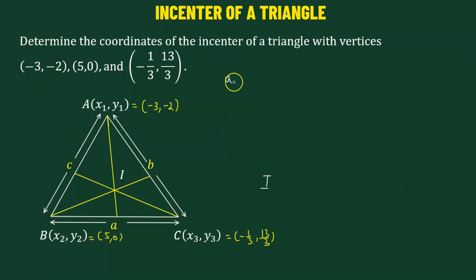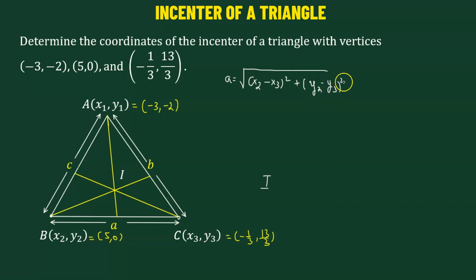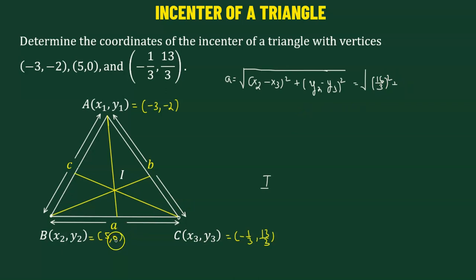We begin by computing the value of a. To find a, we need the coordinates of endpoints B and C. So we take the square root of x2 minus x3 squared plus y2 minus y3 squared. Plugging in: x2 is 5 and x3 is negative 1 over 3, so 5 minus negative 1 over 3 gives 16 over 3, squared. Then y2 minus y3 is 0 minus 13 over 3, which is negative 13 over 3, squared. This computes to 5 times square root of 17 divided by 3.